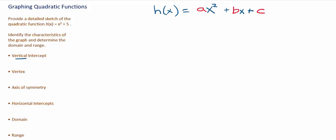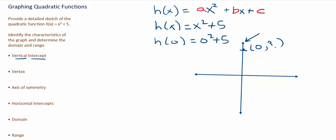Let's start with the vertical intercept. The vertical axis is the one that goes up and down, and I want to know where the graph crosses that axis. At that point, the input would be 0. To find the output, I'll take the equation and replace x with 0. 0 squared is 0, and 0 plus 5 is 5.